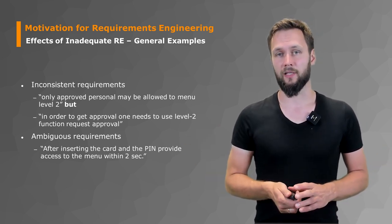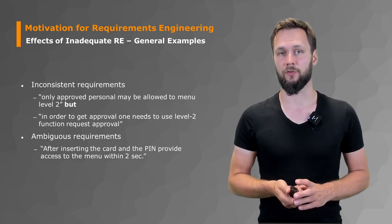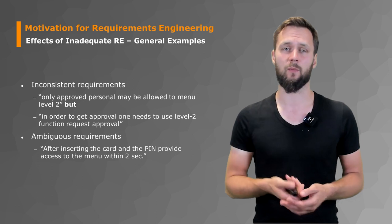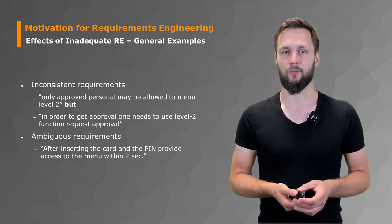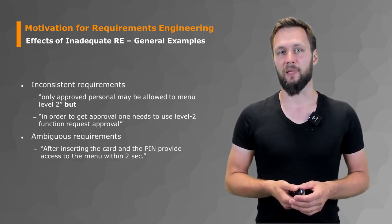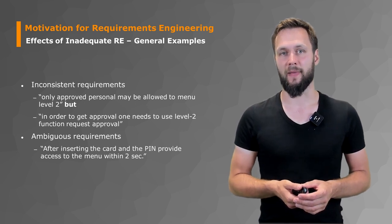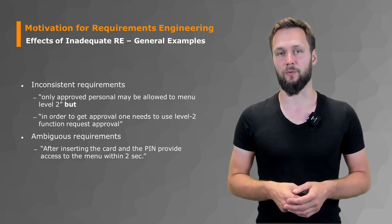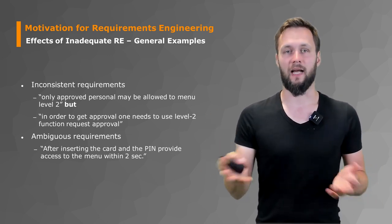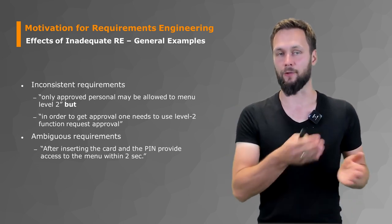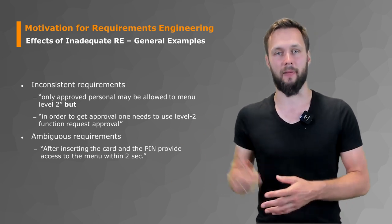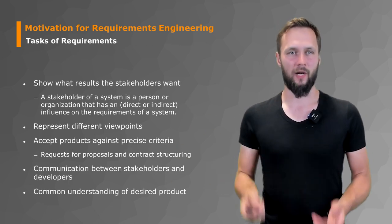Another important category we'll spend quite some time on are ambiguous requirements — requirements that aren't really clear because there are multiple ways to interpret them. For example: 'after inserting the card and the PIN, provide access to the menu within two seconds.' There are different interpretations of what the actual behavior of the system should be versus what will actually be implemented.